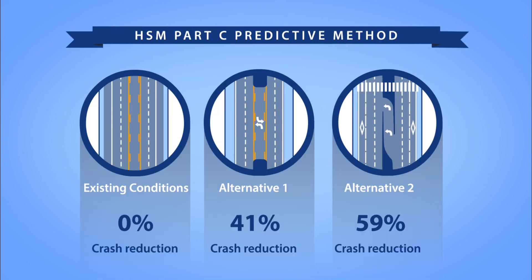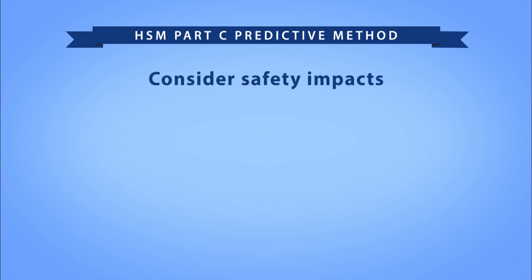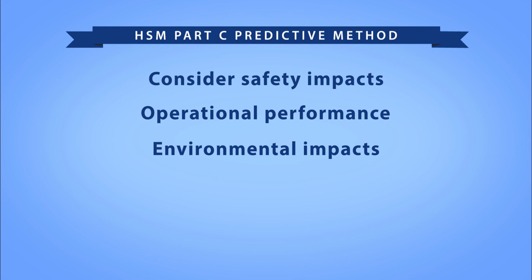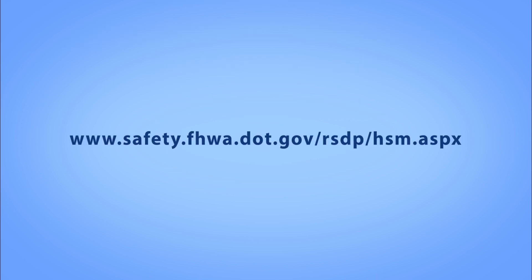This video demonstrated the use of the Highway Safety Manual Part C Predictive Method to estimate the long-term average crashes for a site of interest under existing or future conditions. You can use these estimates to consider safety impacts alongside other typical factors like operational performance or environmental impacts, and to evaluate multiple design alternatives from a safety perspective, allowing you to make confident, informed decisions and prevent certain crashes from happening. Refer to the resource page for additional guidance, examples, and courses on the use of the predictive method. At the Federal Highway Administration, safety is our top priority. For more information, visit safety.fhwa.dot.gov.